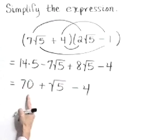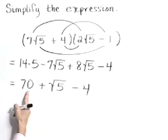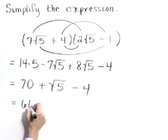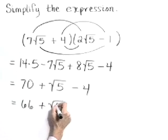As a last step, let's combine our numeric values. 70 minus 4 is 66 plus the square root of 5.